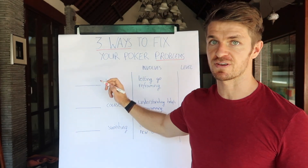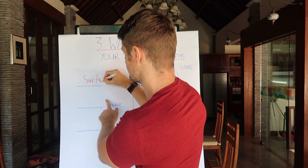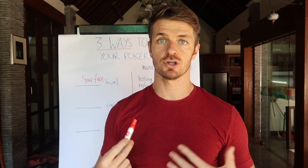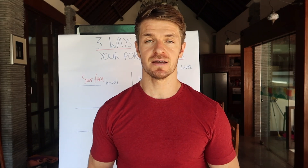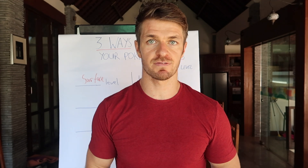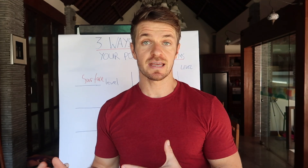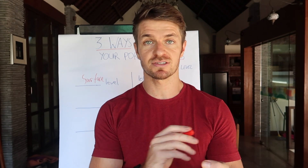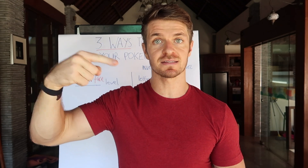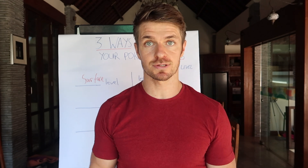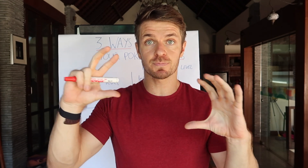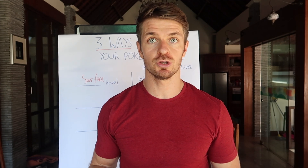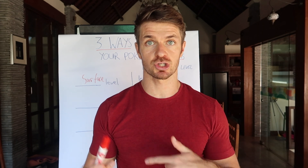The first level is what we're going to call surface level. Surface level changes involve letting go and reframing, and this works with your thoughts and your emotions. This is about being very conscious day to day and going, wait a second, the way I'm thinking and feeling isn't serving me. This is coming up with logic statements when you're tilting, correcting thinking errors as they come up, and being very mindful of when they come up. The best ways of doing this are to keep a journal, write down situations that cause you problems and how you thought about them, then reframe and think about it differently. It's about letting go when emotions come up — actually letting those emotions come through you rather than clinging onto them.